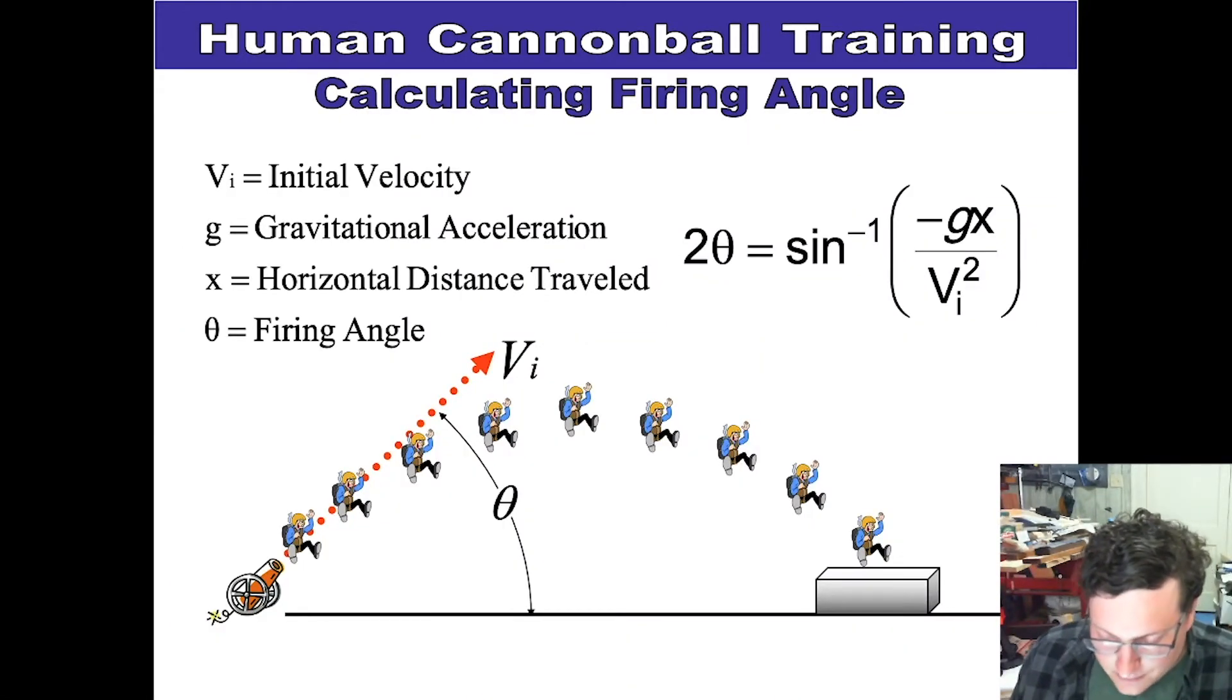So, the last type that we're going to look at is dealing with the unknown angle. If we don't know the angle that we're actually needing to fire at. Same concepts: initial velocity, gravitational acceleration fixed on Earth's gravity, x distance we'll need to know that, but the firing angle.